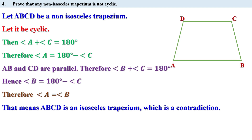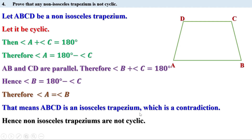Because we started by saying ABCD is a non-isosceles trapezium. Why did we get a contradiction? Because we started wrong by assuming it was cyclic. Therefore it is not cyclic, or any non-isosceles trapezium is not cyclic. If it is not cyclic, then angle A plus angle C is not equal to 180 degrees, so we cannot say angle A equals angle B, and we got this contradiction because we started wrong.